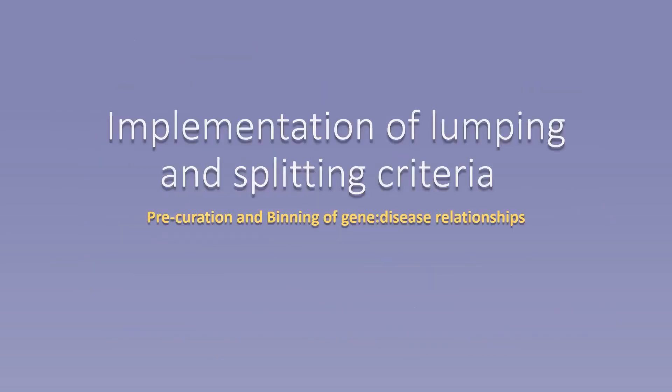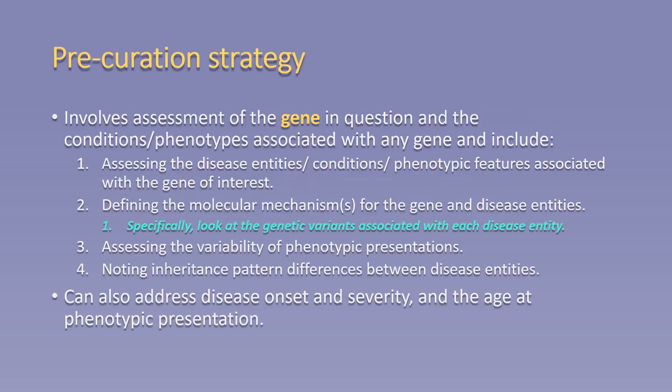In an effort to facilitate lumping and splitting issues, we developed pre-curation and binning strategies that aid in defining the appropriate disease entity for gene disease curations based on our criteria. This process occurs prior to the full curation, as the disease entity—or more specifically, the Mondo disease ontology number—is required before beginning your gene disease curation in the ClinGen gene curation interface. Pre-curation is meant to be an expeditious, high-throughput approach to assess the disease entity prior to collecting the genetic and experimental data required for the full scoring and classification of a gene disease relationship.